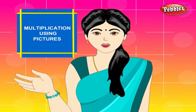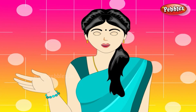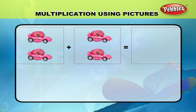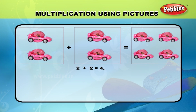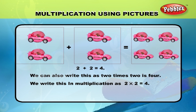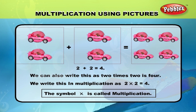Multiplication using pictures. As we have already learned, 2 cars plus 2 cars is equal to 4 cars. 2 plus 2 is equal to 4. We can also write this as 2 times 2 is 4. We write this in multiplication as 2 into 2 is equal to 4. This symbol is called the multiplication symbol.